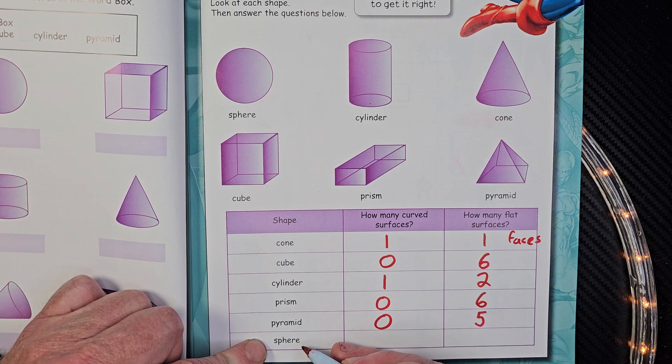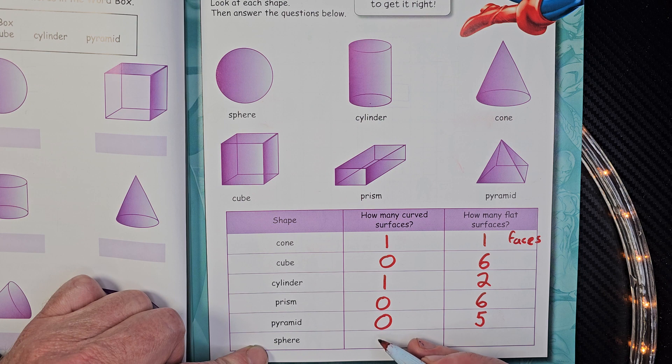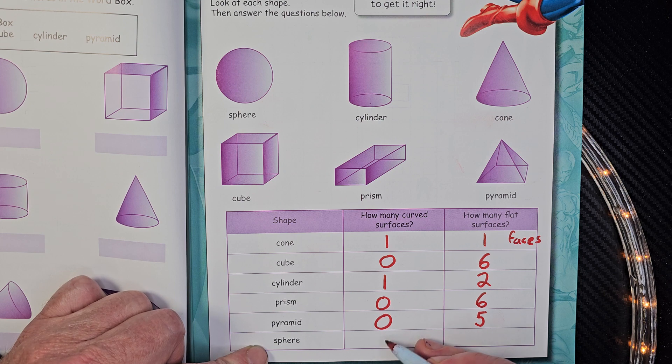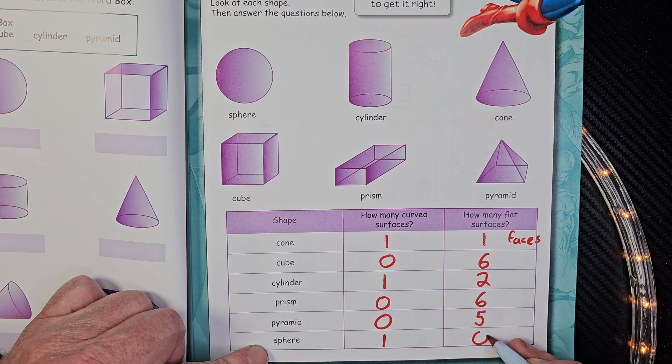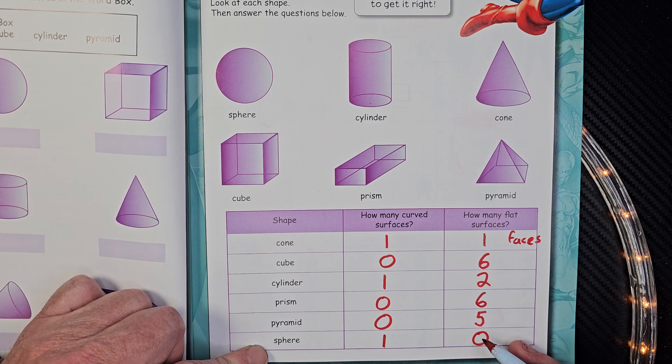Sphere. How many curved surfaces are there? One. How many flat surfaces? Zero. Nada. Zilch. Alright.